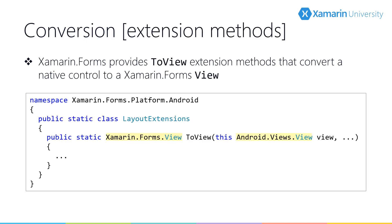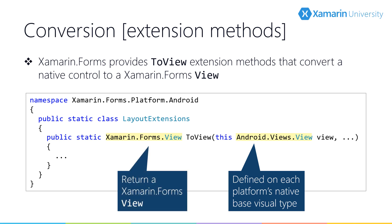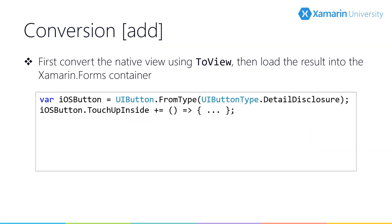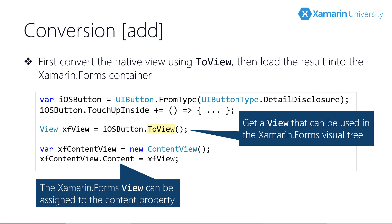So what do we do if we want to set an attached property or assign a native control as content on a Xamarin Forms element such as a page or a frame? The ToView method is defined on each platform on the platform-specific base view type and it returns a Xamarin Forms view. This return view can then be used like any other view defined in your Xamarin Forms shared code. Here we're creating an iOS detail disclosure button in the iOS head project and then calling the ToView extension method. The returned Xamarin Forms view can then be assigned to the content property of the Xamarin Forms content view.